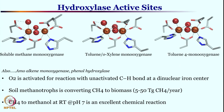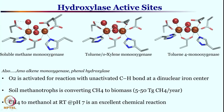This class of enzymes is not limited to converting methane to methanol. You can have a series of other reactions, even aromatic hydroxylation. For instance, toluene can be converted at ortho toluene hydroxylase. So ortho, meta, and para hydroxyl toluene can all be synthesized.